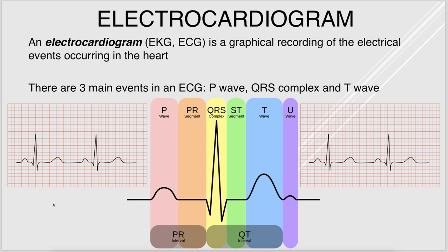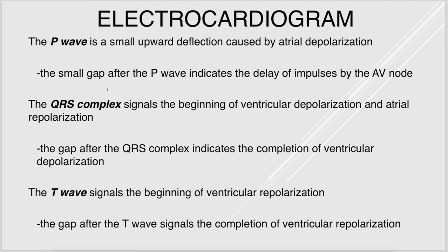The EKG is a graphical representation of electricity in the heart. There are three main events: the P wave represents depolarization of the atria by the SA node; the QRS complex is ventricular depolarization; and the T wave is ventricular repolarization. The PR segment represents the delay at the AV node, and the U wave is the finishing of repolarization of the Purkinje fibers, but just know those three big events: P wave, QRS complex, and T wave.